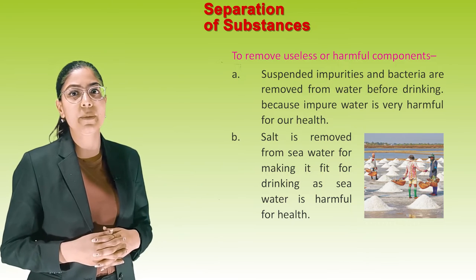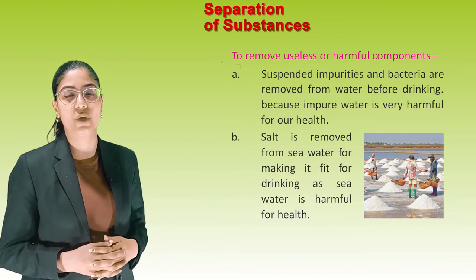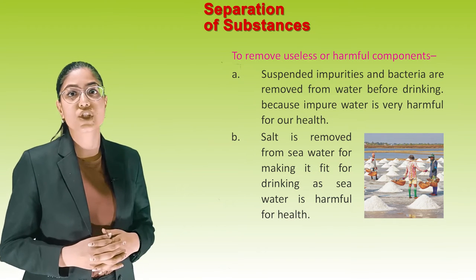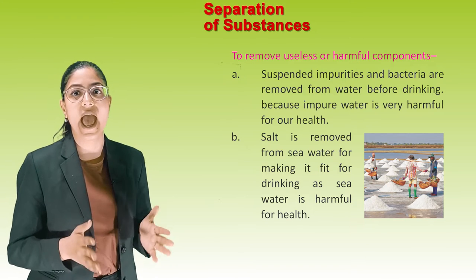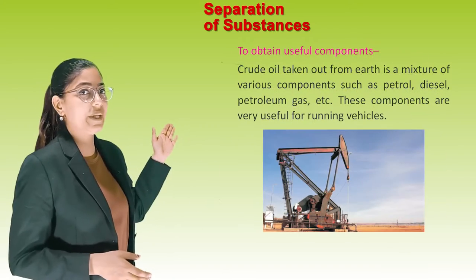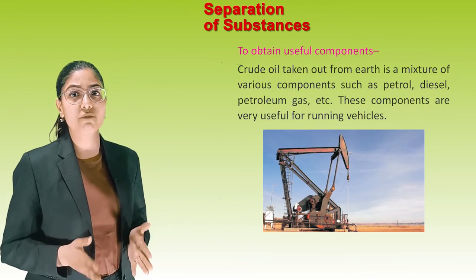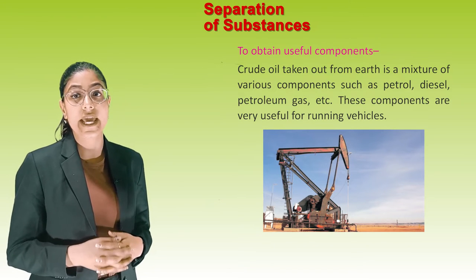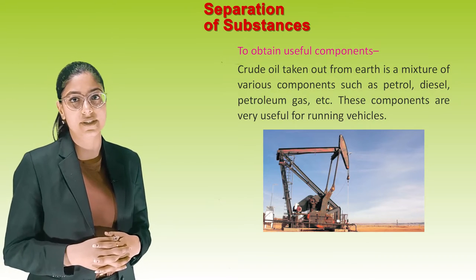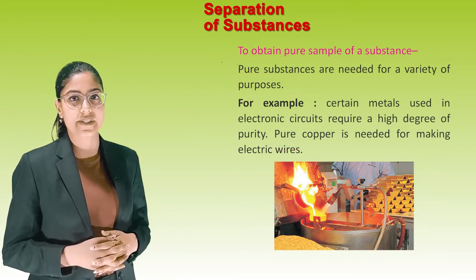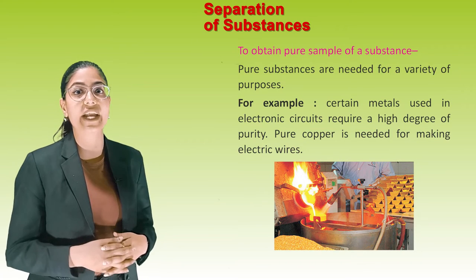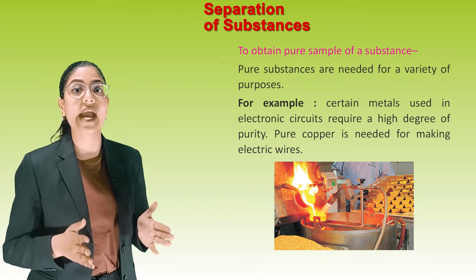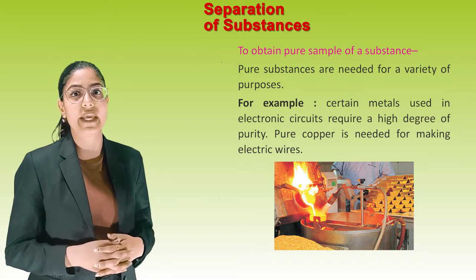To remove useless or harmful components: suspended impurities and bacteria are removed from water before drinking because impure water is very harmful for our health. Salt is removed from seawater to make it fit for drinking, as seawater is harmful for health. To obtain useful components: crude oil taken from the earth is a mixture of various components such as petrol, diesel, and petroleum gas, which are very useful for running vehicles. To obtain a pure sample of a substance: pure substances are needed for a variety of purposes — for example, certain metals used in electronic circuits require a high degree of purity, and pure copper is needed for making electric wires.